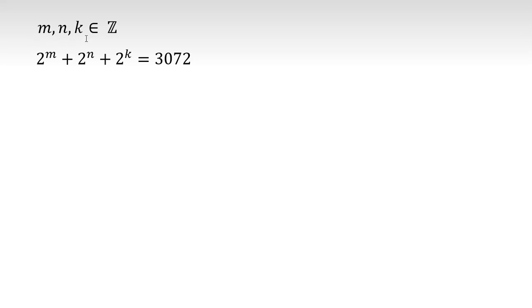m, n, k are integers. 2 to the m plus 2 to the n plus 2 to the k equals 3072. We want to find m, n, k.